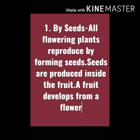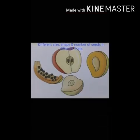First, we will take reproduction by seed. All flowering plants reproduce by forming seeds. Seeds are produced inside the fruit. A fruit develops from a flower.